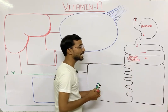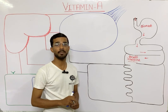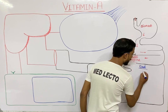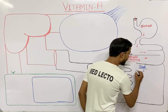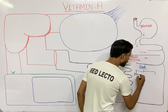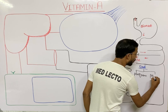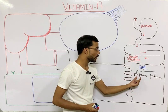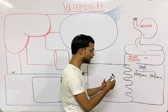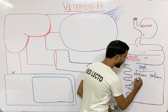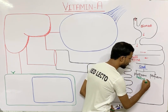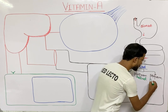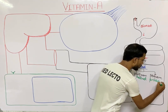In the diet, Vitamin A is present in two forms. It can be present in the pre-form vitamin A, which is retinol, or the pro-form vitamin A, which is beta carotene.